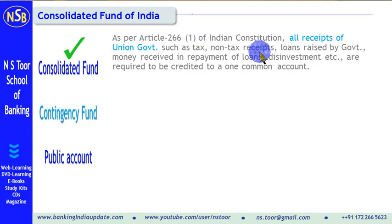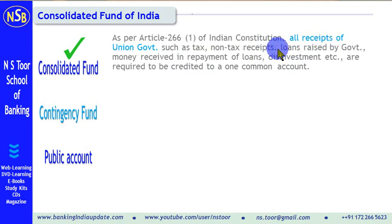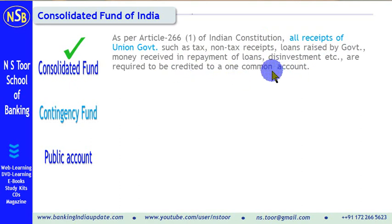All that money which the government is receiving is required to be credited to one common account. That common account is called the Consolidated Fund of India.